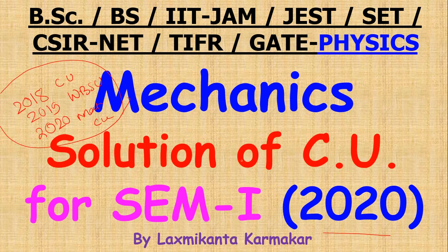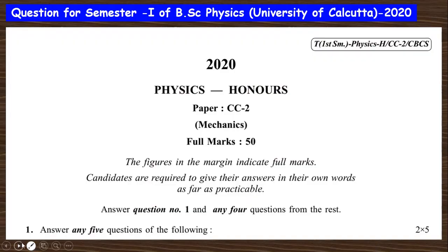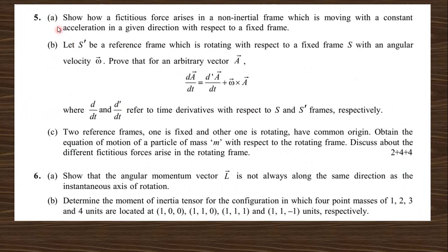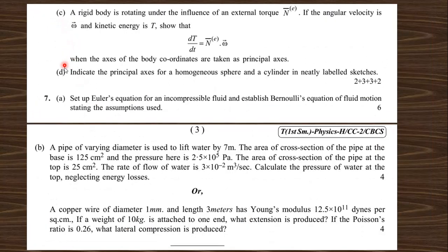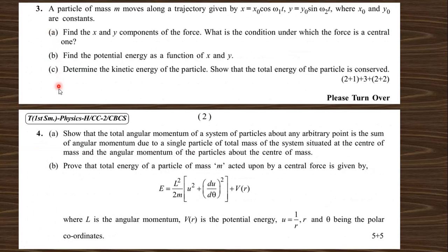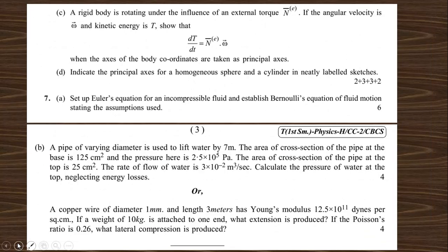Let's start with the questions from 2020 asked in CU for semester one physics mechanics. In question number one you need to solve five questions from a, b, c, d, e, f. From the rest you need to solve any four: questions 2a, b, c; 3a, b, c; 4a, b; 5a, b, c; 6a, b, c, d; and 7a, b. I request all of you to try solving these questions yourself first, then watch the solution.